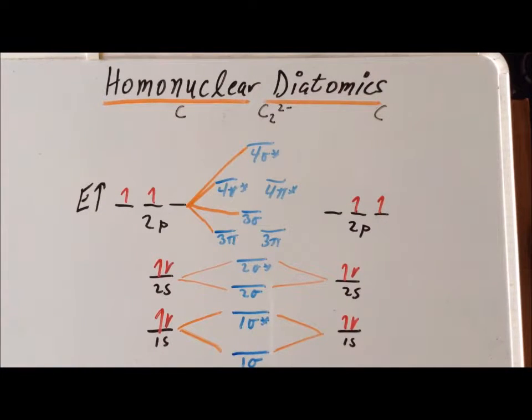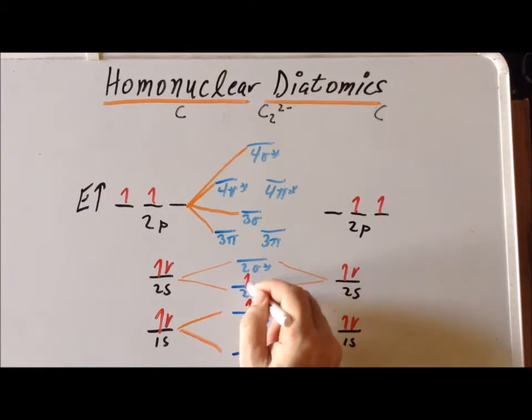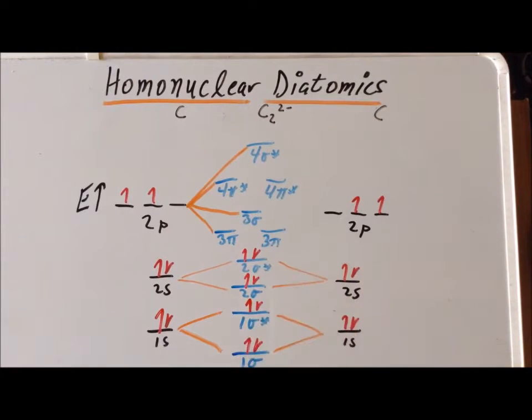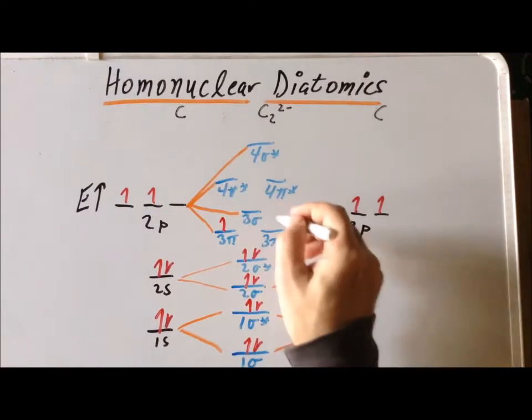Again, we start putting electrons in at the bottom to fulfill the Aufbau principle. And we get our first eight electrons in without any trouble. We have six remaining electrons, and we have arrived at the 3 pi level, which is doubly degenerate. So our first two electrons have to go one in each to fulfill Hund's rule.